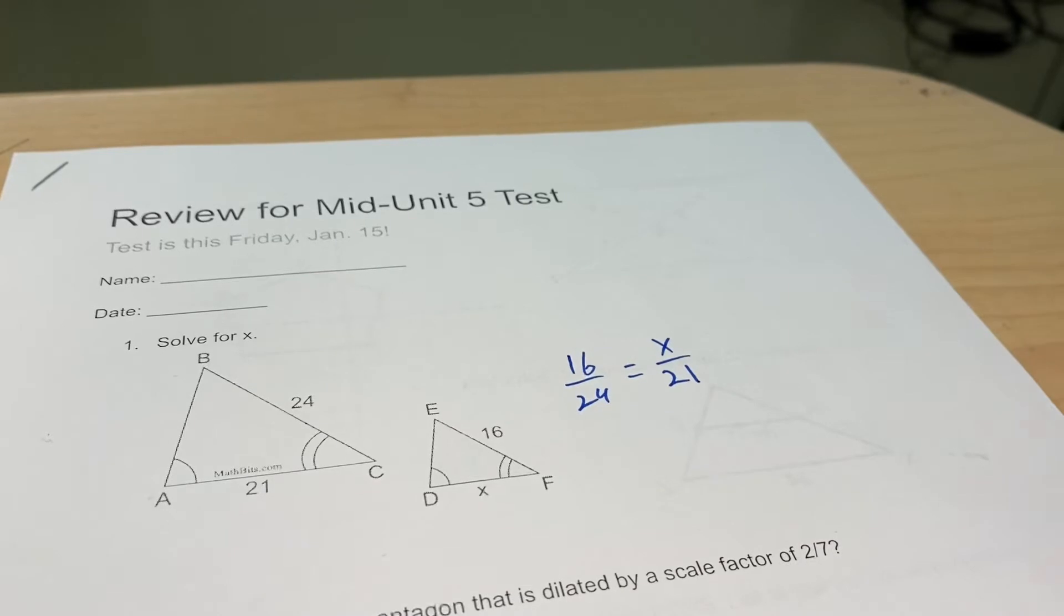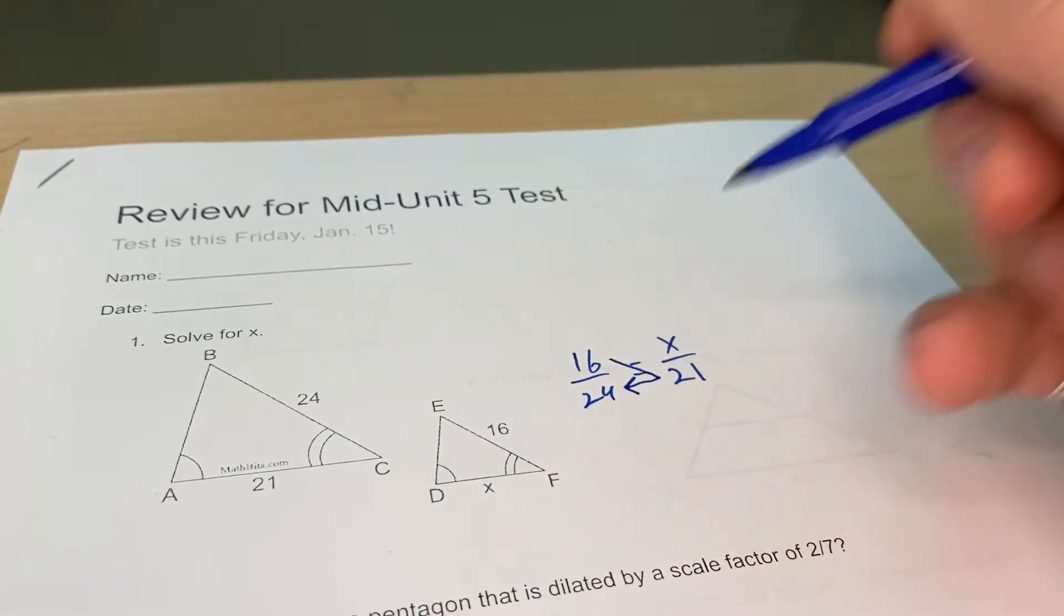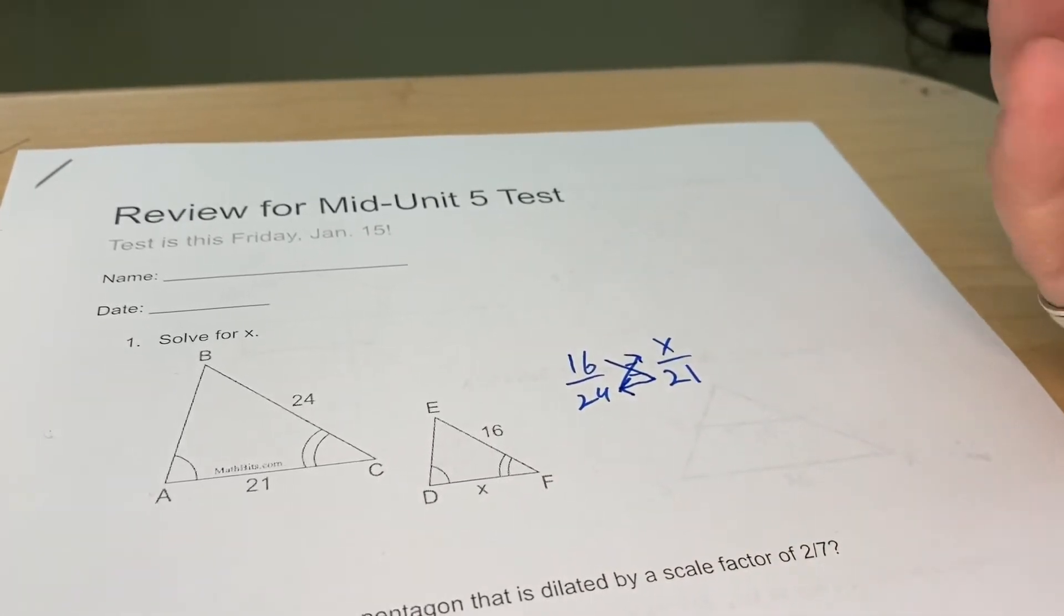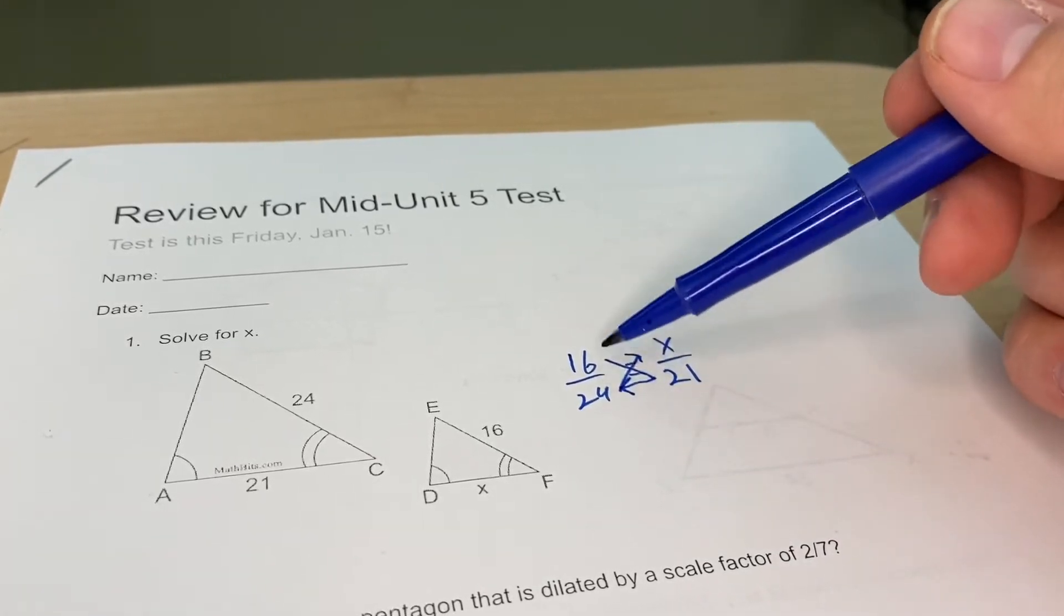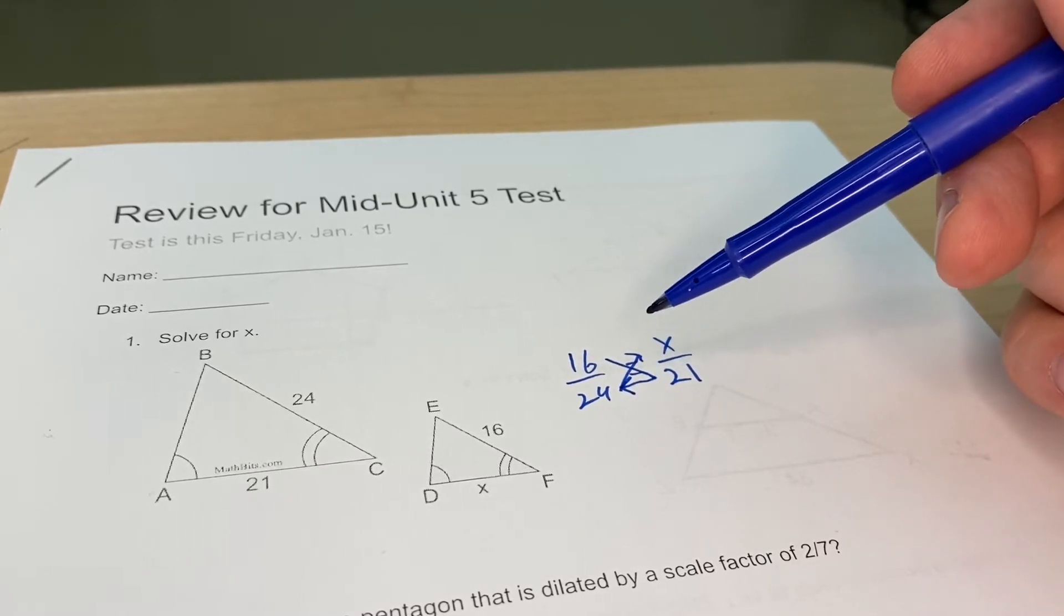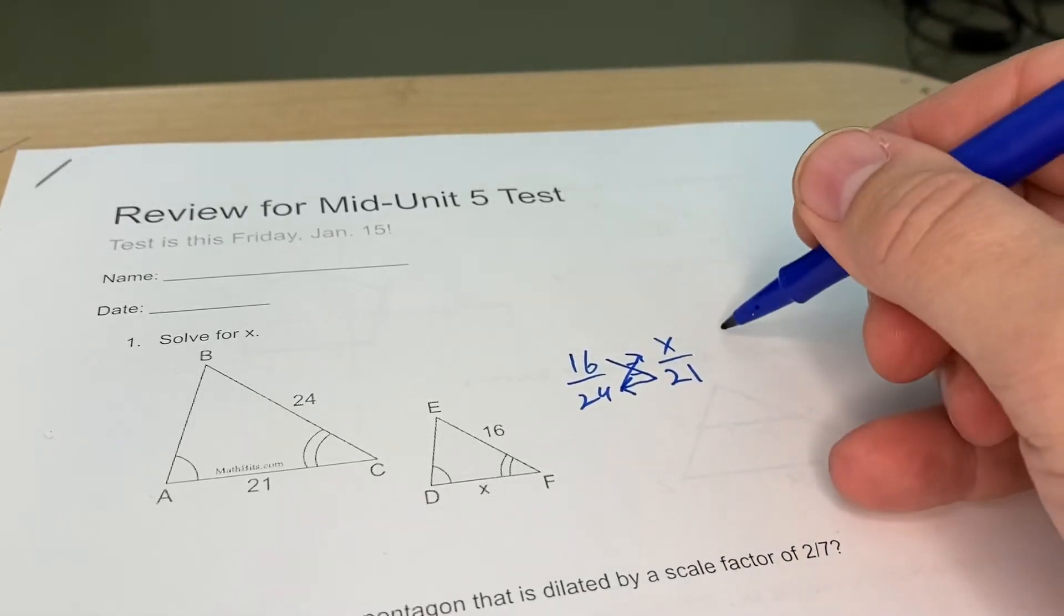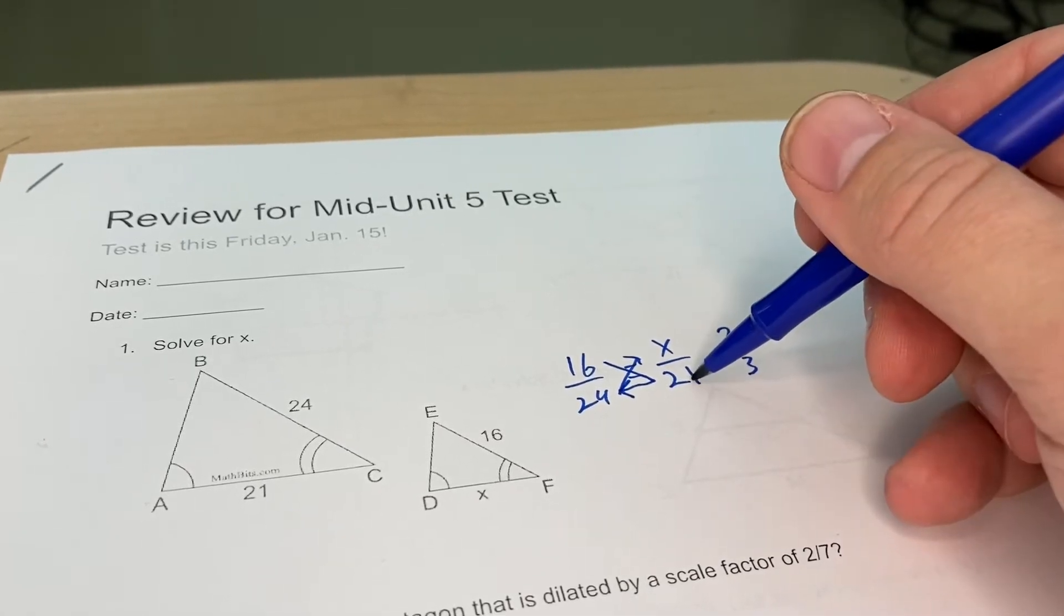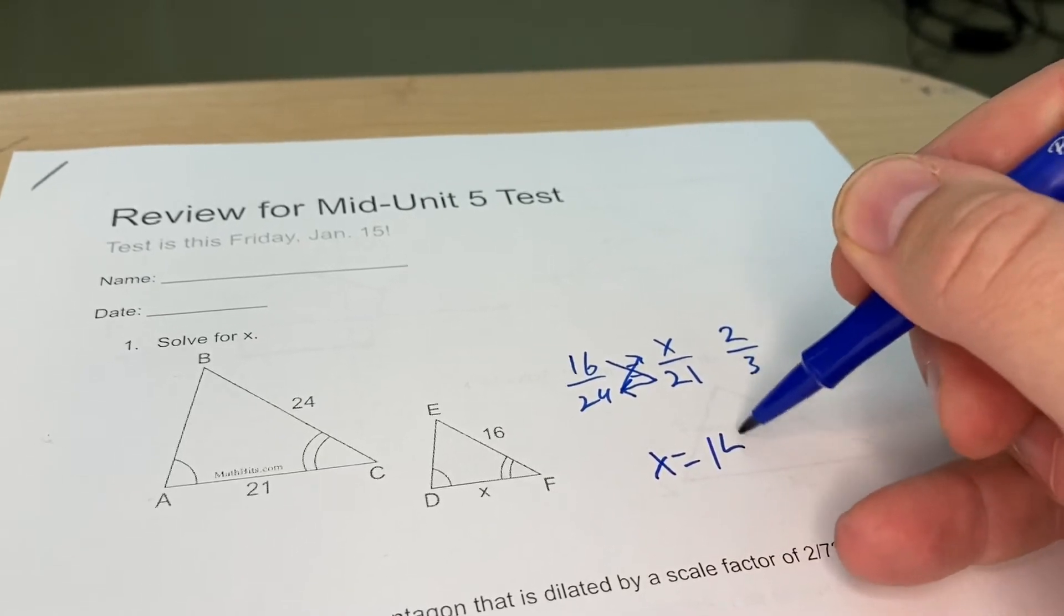Now if you're working this on your own, you've got your calculator, just 16 times 21 divided by 24 will give you your answer. Or you can cross multiply and then set it up and divide that out. Since I'm working this without a calculator, I'm looking to reduce this fraction. 16 and 24 are both divisible by 8, so that's going to be 2 over 3. Since I know I have to multiply 3 by 7 to get 21, I'm going to multiply 2 by 7 and x is equal to 14.